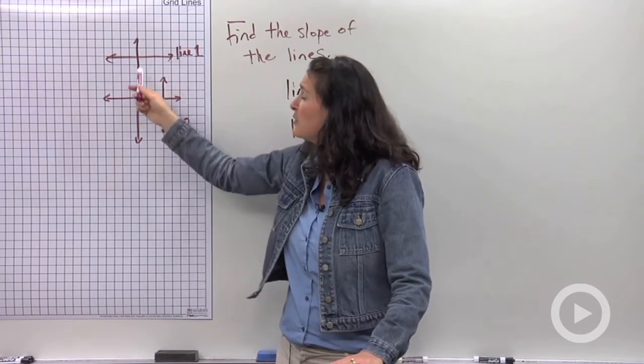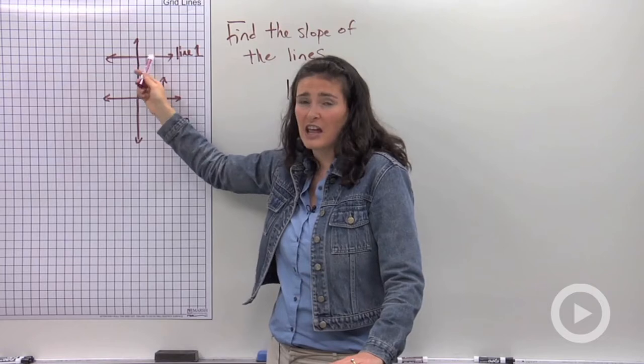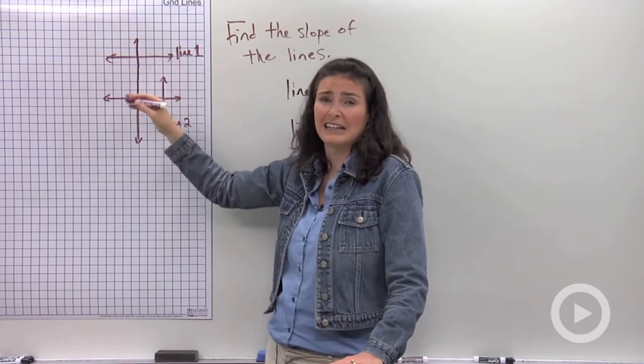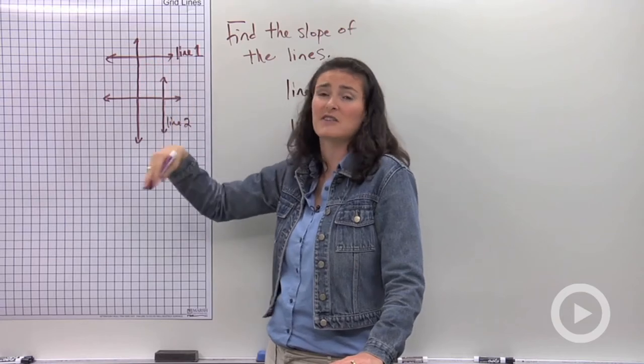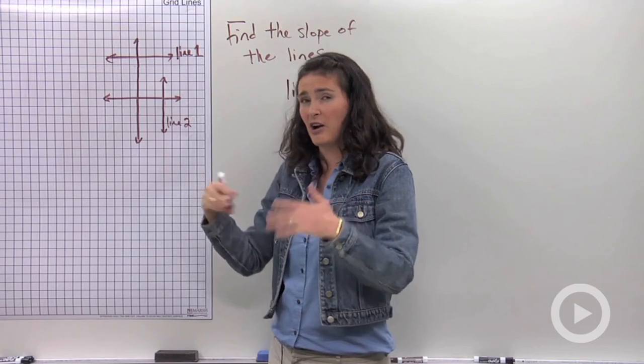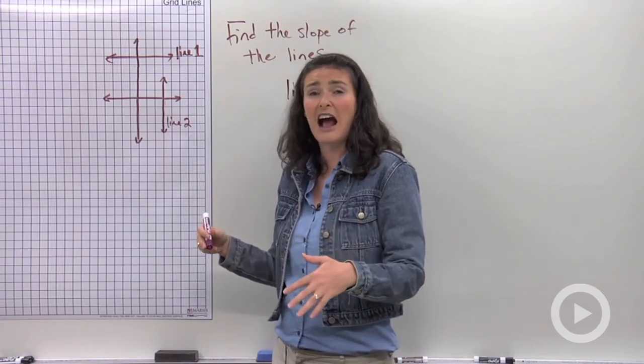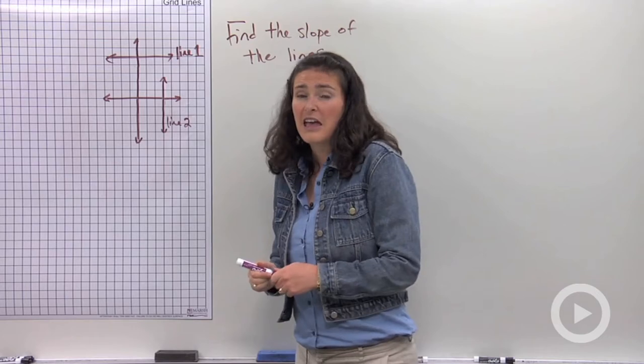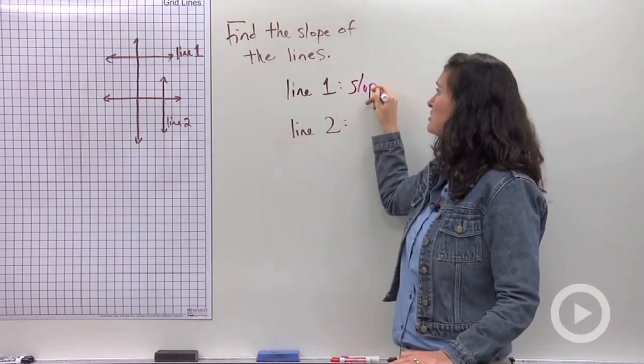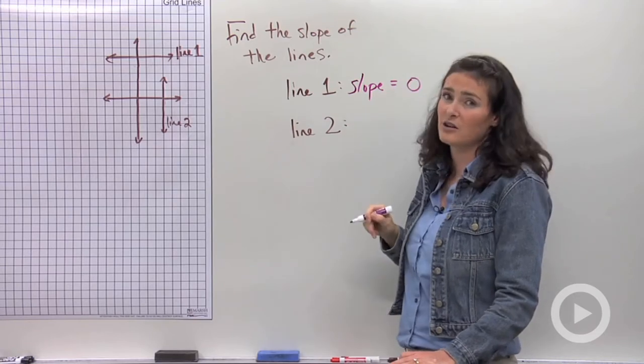But when I try that, I see that my vertical change is zero, right? This line is horizontal. It's like a flat line. There's no change up and down, no vertical change. That's why no matter how I write this as a fraction, I would have zero in the numerator. If I have zero in the numerator of a fraction, that means the fraction equals zero.